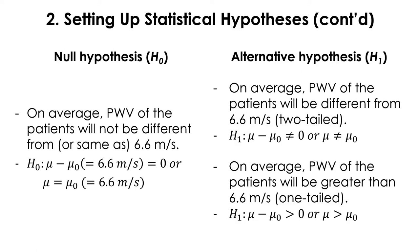Please be aware that you do not implicate the direction of the outcome when setting up the null, even when you are running a one-tailed test in your alternative hypothesis. For example, if your H1 is 'on average, PWV of the patients will be greater than 6.6 meters per second,' the null is still the same — you're assuming no difference, because the null is about no difference, no effect. There is no way to figure out in which direction it will not differ. Therefore, it would be wrong to set the null as 'on average, PWV of the patients will not be greater than 6.6 meters per second.'